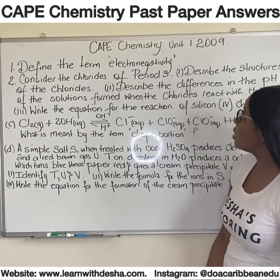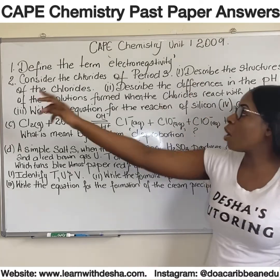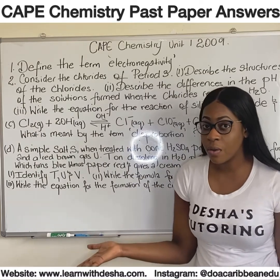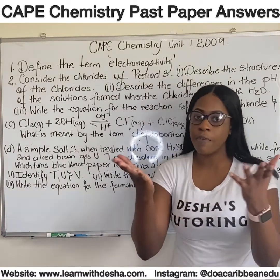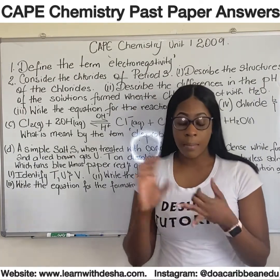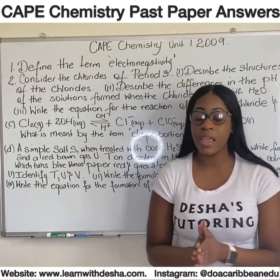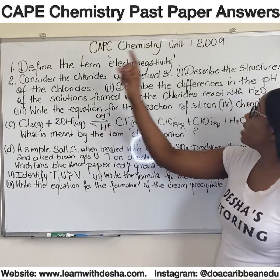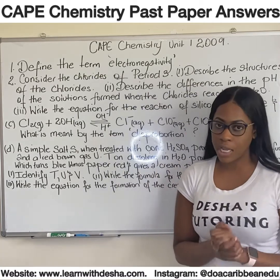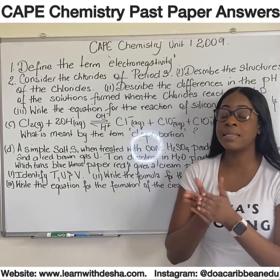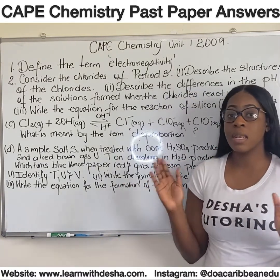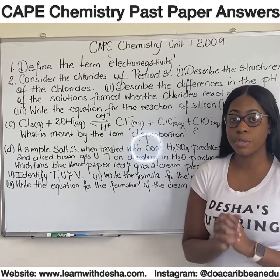Next question: consider the chlorides of period 3. Describe the structures of the chlorides. What are the chlorides of period 3? All the elements except chlorine and argon form chlorides — sodium chloride, magnesium chloride, aluminum chloride. Sodium and magnesium have giant ionic structures. Aluminum chloride is a simple molecular structure. Likewise, the chlorides of silicon, phosphorus, and sulfur all have simple molecular structures.